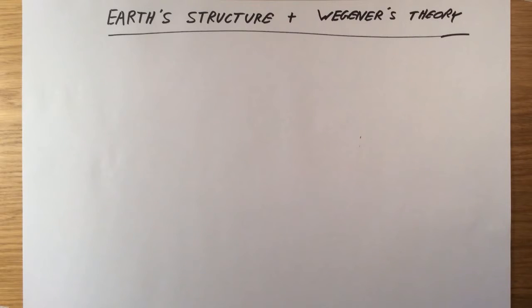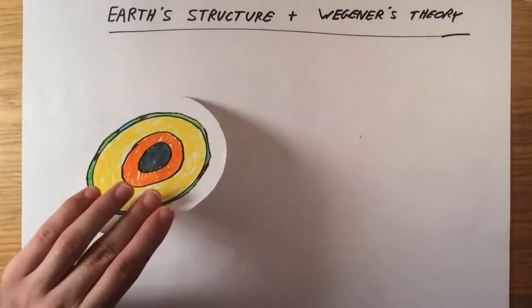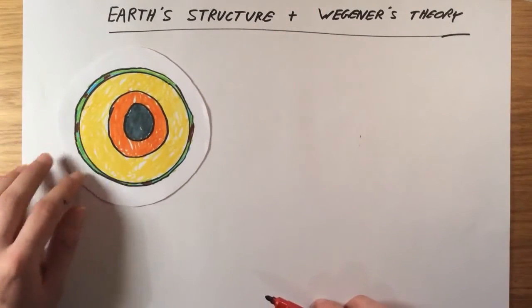By analyzing the waves given off by earthquakes, scientists have managed to determine the structure of the Earth. And it actually looks a little bit like this.